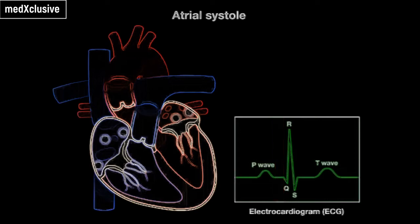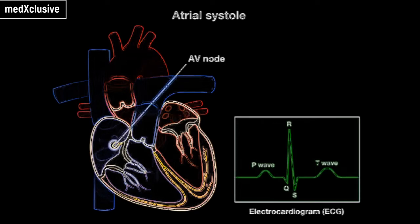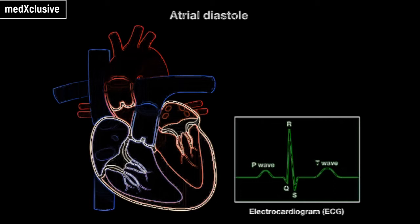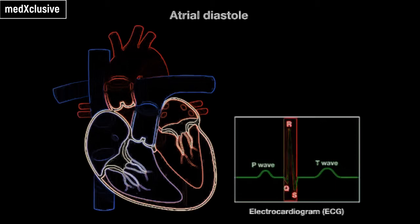Near the end of atrial systole, impulses from the SA node reach the AV node. At this time, impulses spread from the AV node along the ventricular conduction fibers to the walls of the ventricles. This results in ventricular depolarization, which is represented by the QRS complex on the ECG. The atria repolarize, the walls relax, and they remain in diastole for the rest of the cardiac cycle. Atrial repolarization is not seen on an ECG because it is masked by the QRS complex.